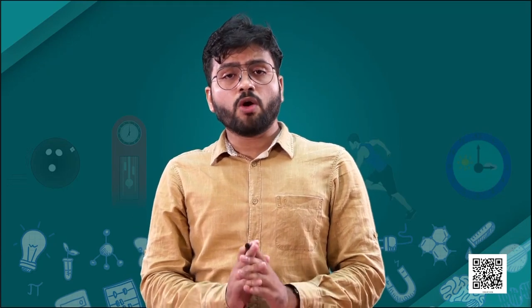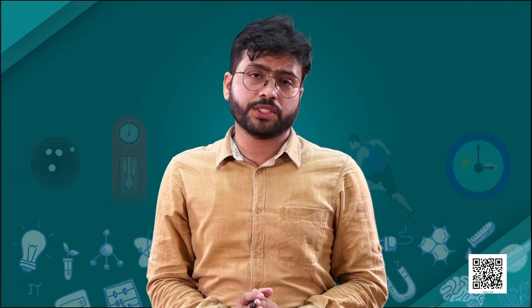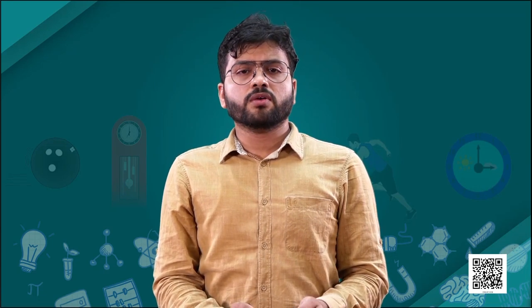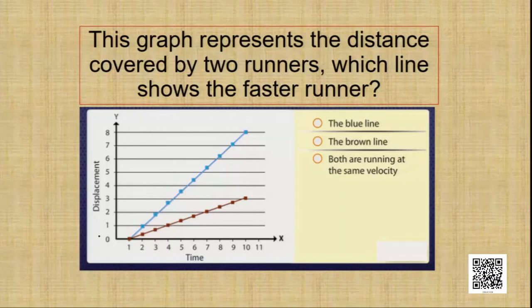At this point, let's find out how much we have understood from this lesson. I have a few questions for you. The first question: the graph represents the distance covered by two runners. We need to find out which line shows the faster runner — whether the blue line or the brown line, or whether both are running at the same velocity. Try to solve it.